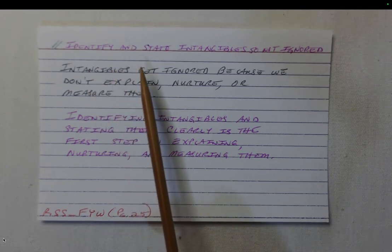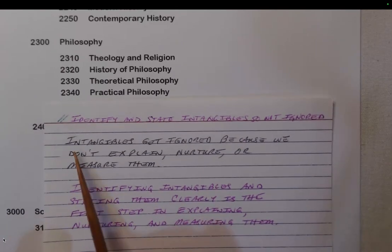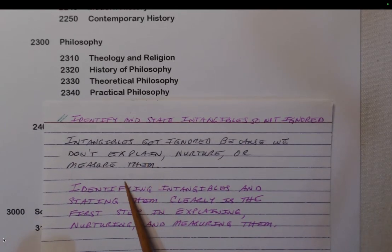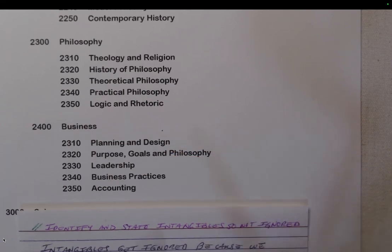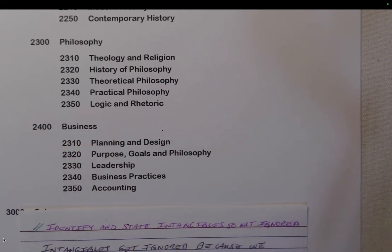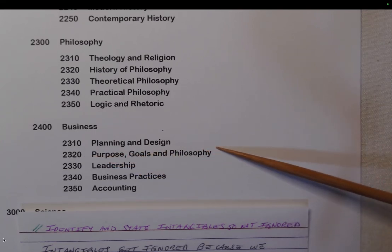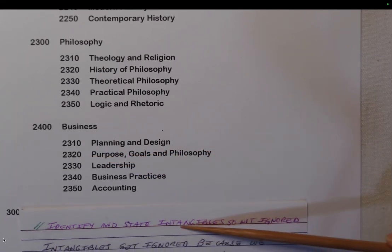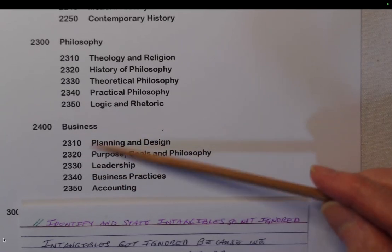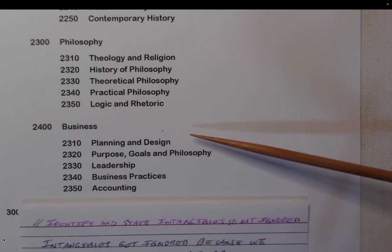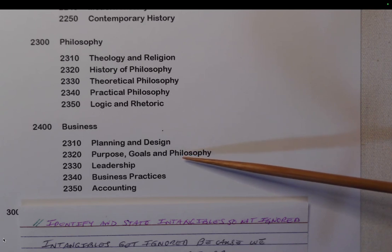My tagline is: 'Identify and state intangibles so they're not ignored.' If this card has no location in my system, I might go to a categories list if I'm using categories. I'd find the proper category — in this case business — and I would probably choose 2320 Purpose, Goals, and Philosophy for this card. One of the advantages of a category system is it can give a home to a card that does not otherwise have a parent.